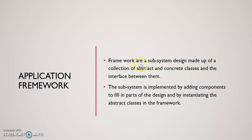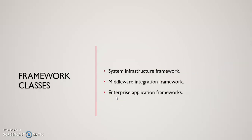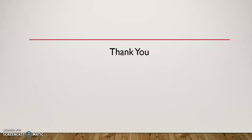Application frameworks are a subsystem design made up of a collection of abstract and concrete classes and interfaces between them. There are three classes: first, system infrastructure frameworks, which simplify the development of portable and efficient systems including operating systems, communication frameworks, and user interface frameworks. Second, middleware integration frameworks, used to integrate distributed applications and components, enhancing modularity, reusability, and extensibility. Third, enterprise application frameworks, which support the development of end-user applications and products.